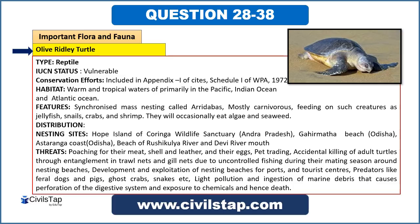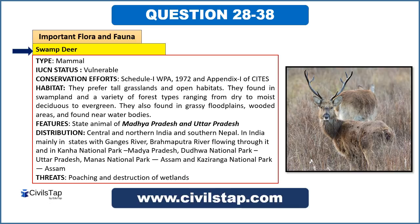The swamp deer is a mammal and herbivorous animal belonging to the IUCN vulnerable category. It is included in Schedule 1 of WPA and CITES Appendix 1. Its habitat is mainly grassland ecosystems and open habitats. In India, it is mainly found along the Ganges and Brahmaputra river regions, and in national parks like Kanha National Park in Madhya Pradesh, Dudwa National Park in Uttar Pradesh, Manas National Park in Assam, and Kaziranga National Park in Assam.